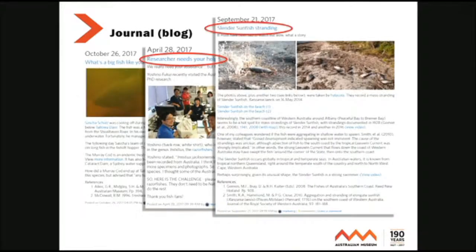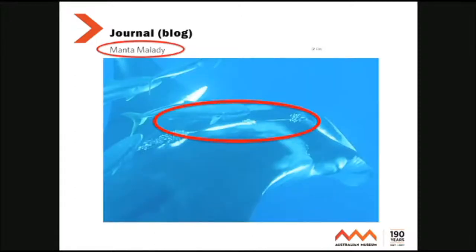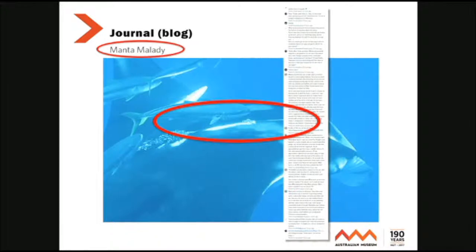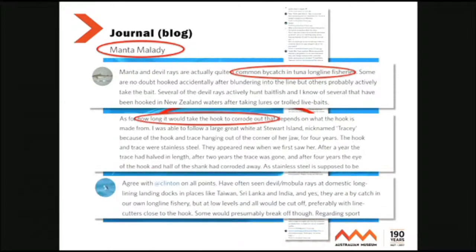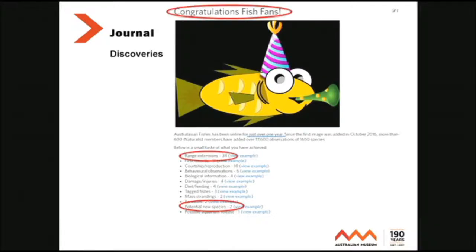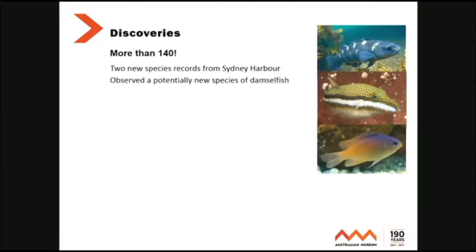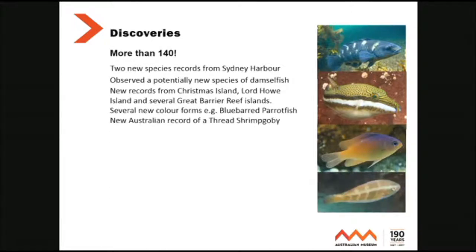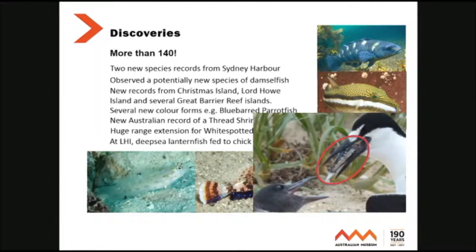I write a journal or blog every week with all kinds of different, hopefully interesting information. Last week's journal was on manta malady — you can see a fish hook embedded in the upper jaw of this manta, towing fishing line, causing damage — and that generated a huge number of comments and information about where they're bycatch, how long it'd take for a hook to corrode, a whole range of stuff. We've made lots of discoveries over the last year: 34 range extensions and a couple of new species potentially. More than 140 discoveries — new colour forms, new records, huge range extensions, and a deep sea lanternfish being fed to a chick on Lord Howe Island. That's bizarre.